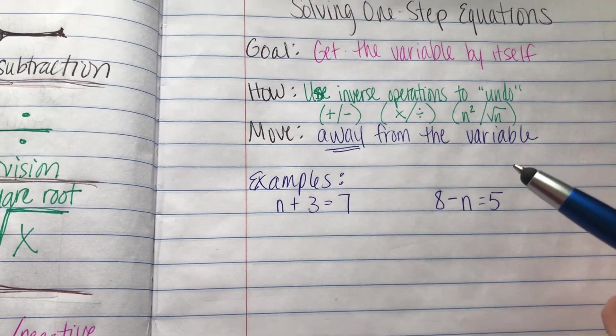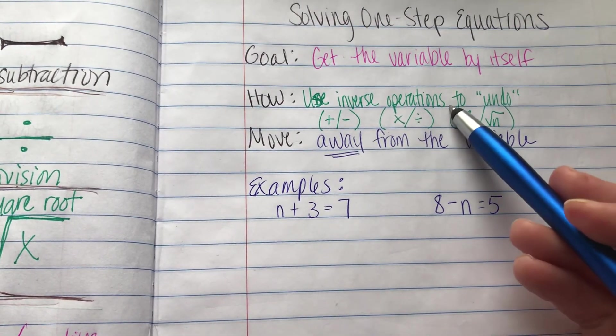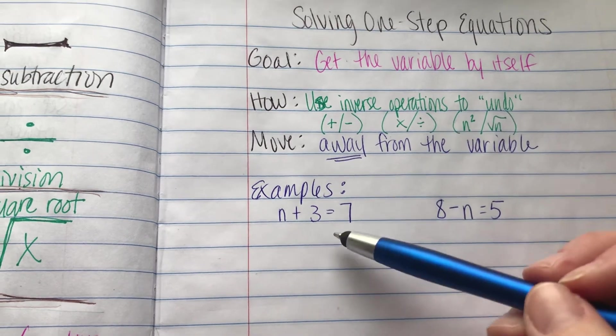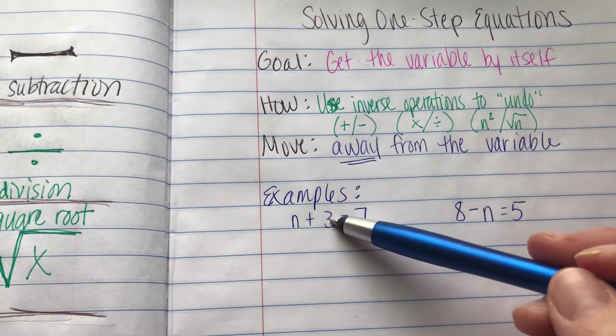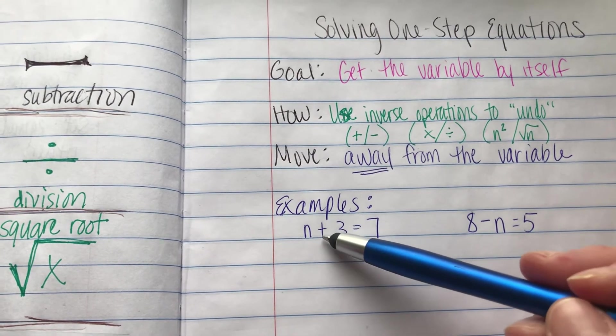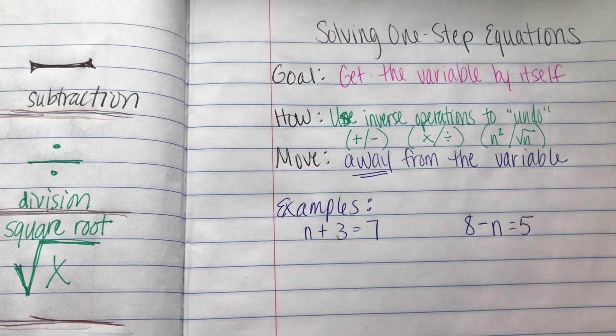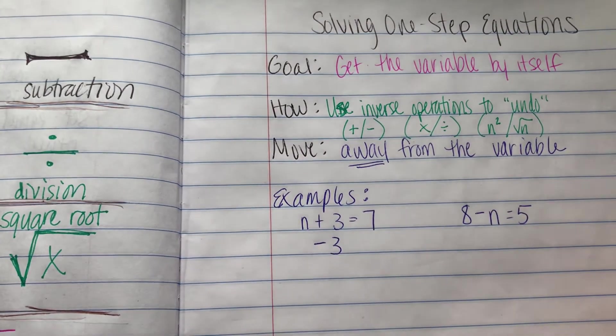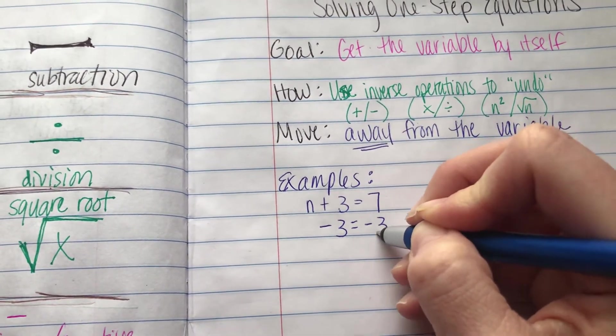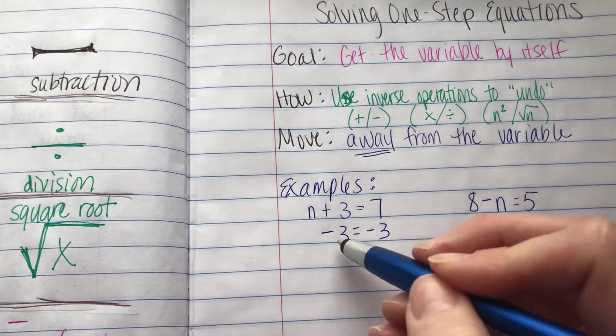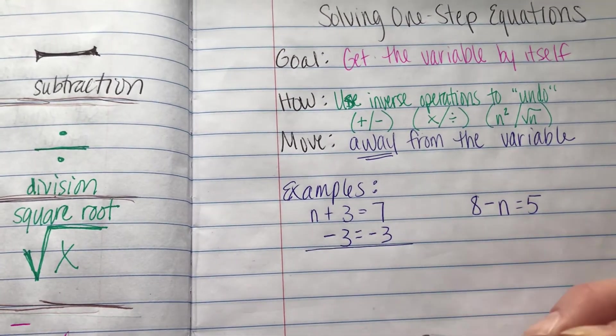So the first step is to use inverse operations. Undo whatever was done to n. n had 3 added to it, and we want to undo that. So instead of adding 3, the opposite of that would be taking 3 away. And just like you learned with your hanger diagrams, when you take 3 away from one side, you have to take 3 away from the other also to keep it balanced.